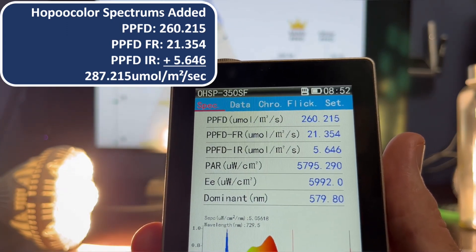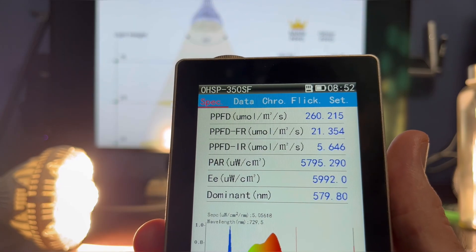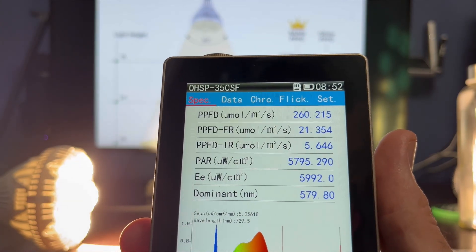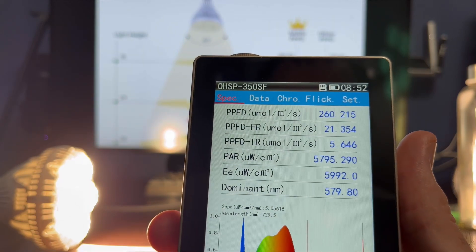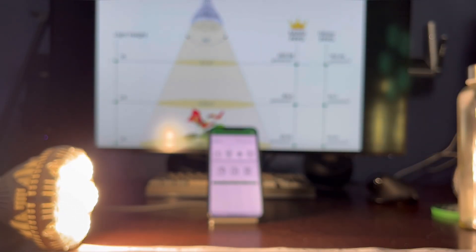I've been going back and forth using the Hopocolor and comparing it with the Apogee Instruments meter to see what I like more. This Hopocolor is definitely more accurate. The Apogee meter is meant more for plant growth, but it's all the same photons.